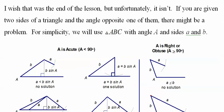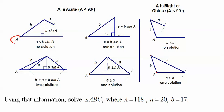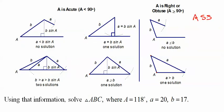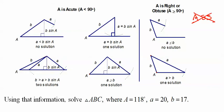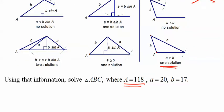Unfortunately, we have complications. This is the angle-side-side (SSA) configuration, which has no congruence theorem. A leg might be too short and not connect, connect perfectly at a right angle, or connect in two places — giving zero, one, or two solutions. For example, an obtuse angle of 118° with side A greater than 17 gives one solution.